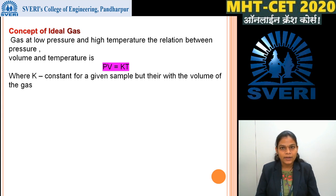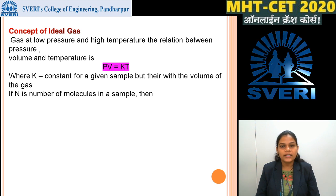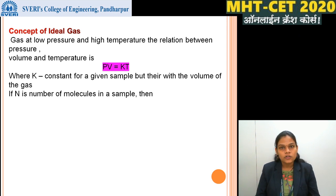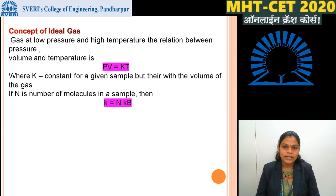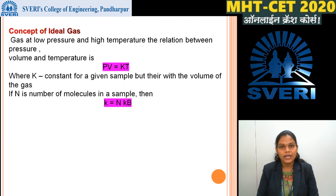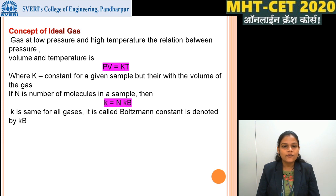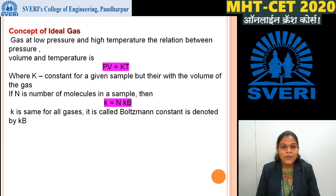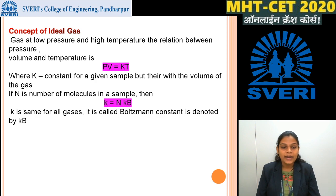K is the constant of a given sample. If the sample is changed, the value of K is also changed. If N is the number of molecules in a given sample — whether gas, solid or liquid, but here we discuss about gas molecules — then small K is equal to N times KB. KB is called Boltzmann's constant, represented by KB.